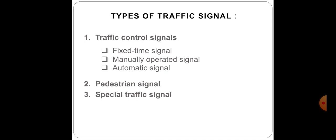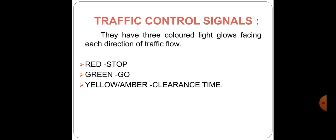Traffic control signals have three colored lights that glow facing the direction of traffic flow. The three colors are red, amber, and green. The red light indicates stop — vehicles must stop when the red light glows. The green light indicates go — vehicles can move forward. The amber or yellow light allows clearance time for vehicles that enter the intersection area at the end of the green phase.